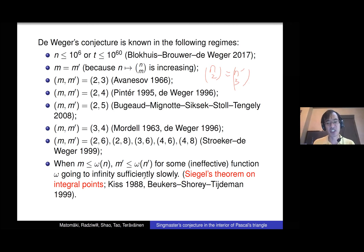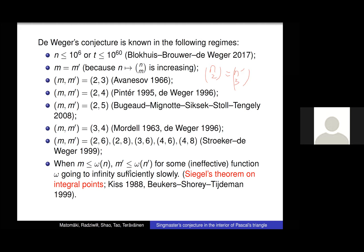Any curve of positive genus can only have finitely many integer points. So as long as n and m' are large enough, you will outrun all the solutions. For m and m' really small compared to n, there will be no solutions other than those in de Vega's conjecture. Now famously, Siegel's theorem is ineffective — it doesn't tell you bounds on where the integer points are.